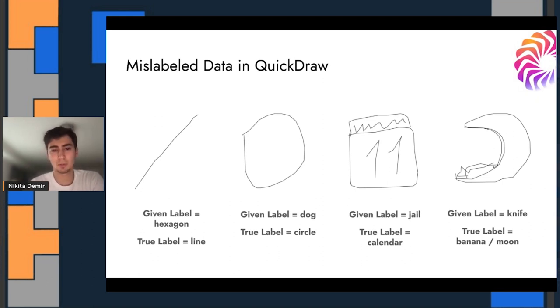These are all examples of errors in public datasets that are used for sketch recognition models. On the second from the left, the circle was given the label of dog. You have what looks like a calendar given the label jail and a banana or moon given the label of knife.